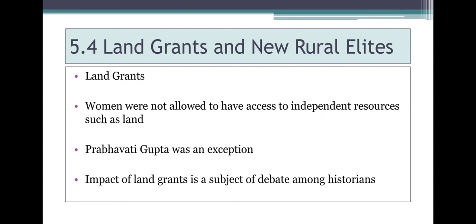Regarding land grants: a ruler could rule more easily by granting land to powerful people who could then control and keep other subjects in order — like the samanthas, who were also given land. The rulers gave land grants as part of administration. One interesting case is Prabhavati Gupta, daughter of one of the most important rulers in Indian history — Chandragupta II. She was married into another important ruling family, the Vakatakas, who were powerful rulers in the Deccan.